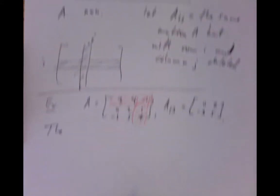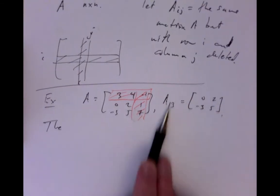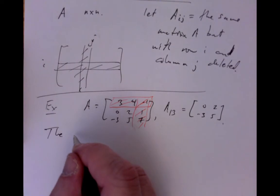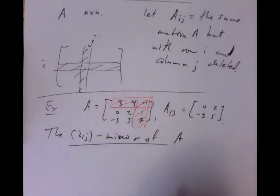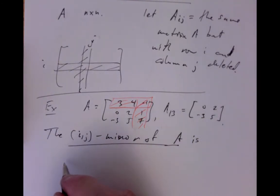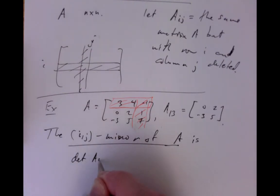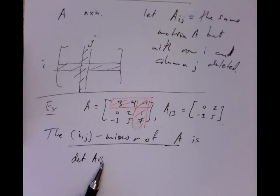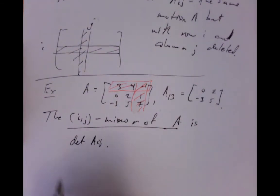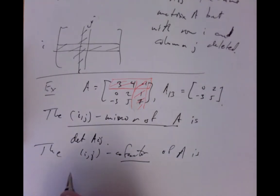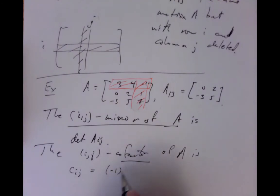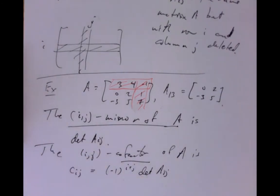Assuming we already know how to calculate determinants of smaller matrices and we want to calculate the determinant of a bigger one: the IJ minor of matrix A is simply the determinant of A_{IJ} — the matrix with that row and column deleted. The IJ cofactor of A is C_{IJ} = (-1)^(I+J) times the determinant of A_{IJ}, that minor. So we take this minor and put a plus or minus sign in front of it — that's called the cofactor.